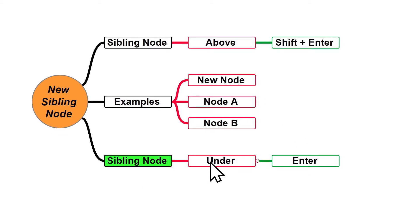And if you want to create a new sibling node under a node, just select the node and press Enter. I'm going to select node B and press Enter.